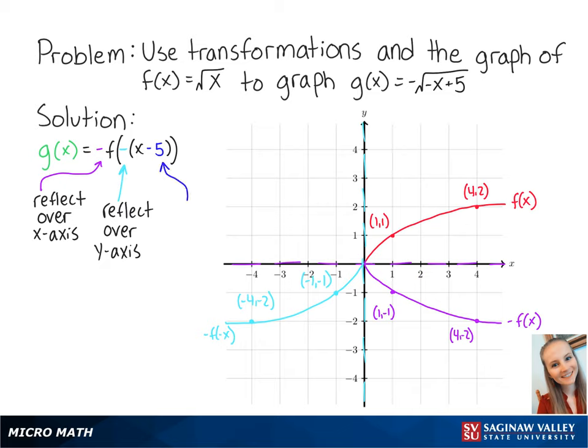Subtracting 5 from x means that we will shift the new graph to the right by 5 units. So our new points are at (1, negative 2) and (4, negative 1). Connecting these points, we get the graph of g(x) and this is the final answer.